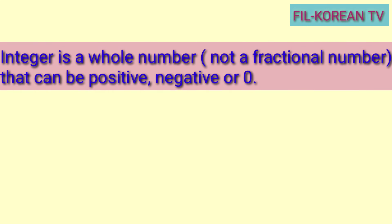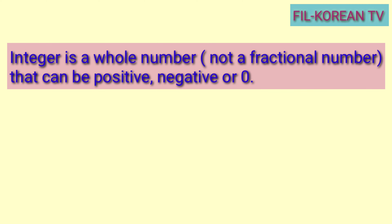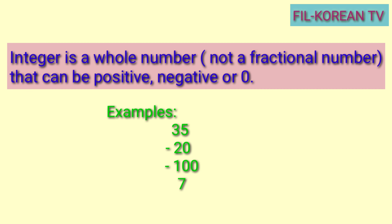First, we must know the meaning of integers. When we say integer, it is a whole number, not a fractional number, that can be positive, negative, or zero. Examples: 35, negative 20, negative 100, 7, and 0.